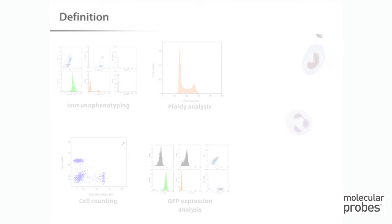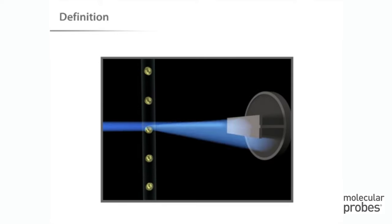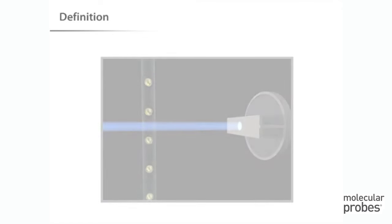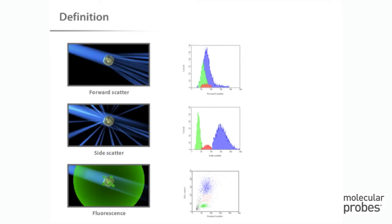The flow cytometer performs this analysis by passing thousands of cells per second through a laser beam and capturing the light that emerges from each cell as it passes through. The data gathered can be analyzed statistically by flow cytometry software to report cellular characteristics such as size, complexity, phenotype, and health.